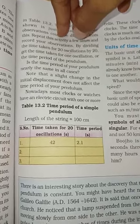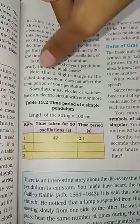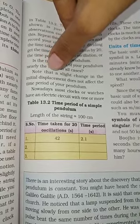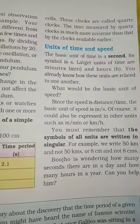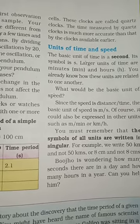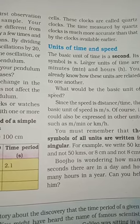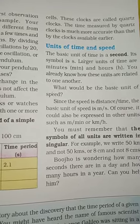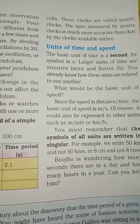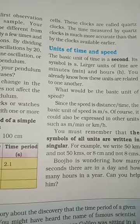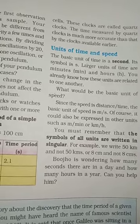Nowadays, most clocks or watches use an electric circuit with one or more electric cells. These clocks are called quartz clocks. The time measured by quartz clocks is much more accurate than that by older clocks. The basic unit of time is the second, with symbol S.